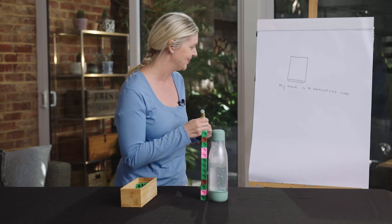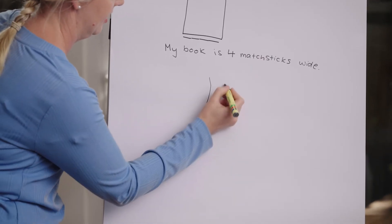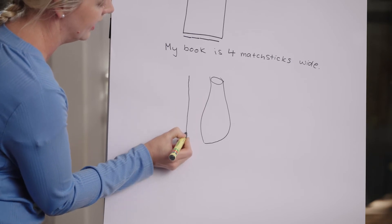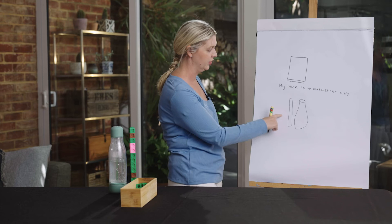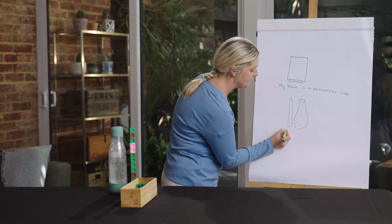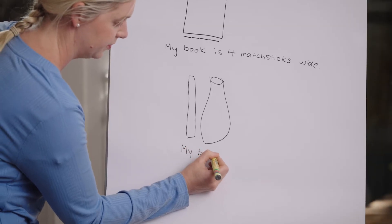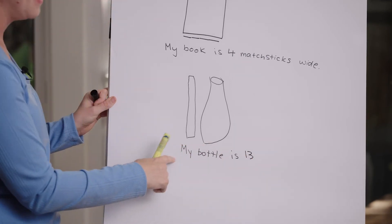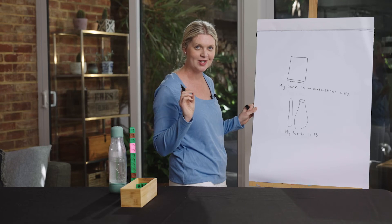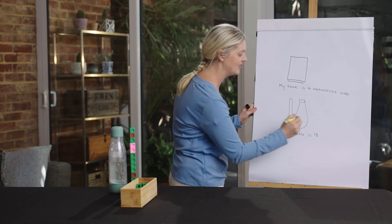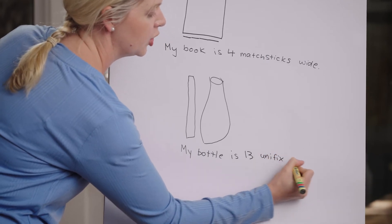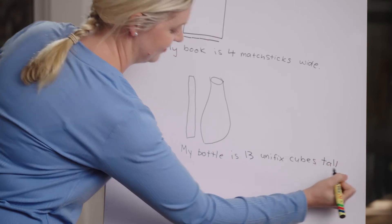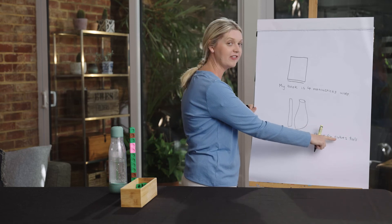Let's record. I'll draw my drink bottle, and here I'm going to draw a line to represent the 13 Unifix cubes. Then I'll write my sentence: my bottle is 13 — our informal unit of measure was Unifix cubes. And what kind of long? Tall. My bottle is 13 Unifix cubes tall.